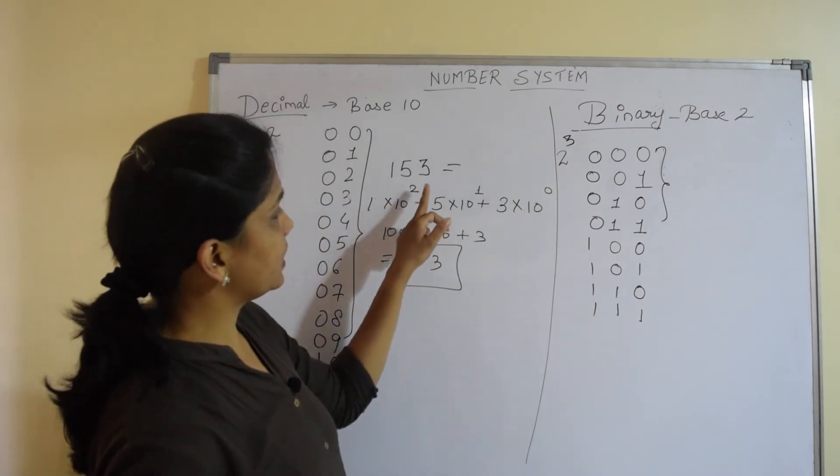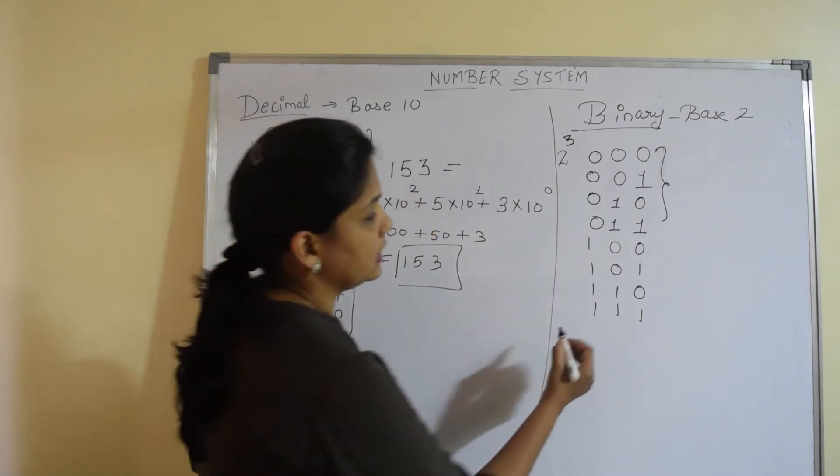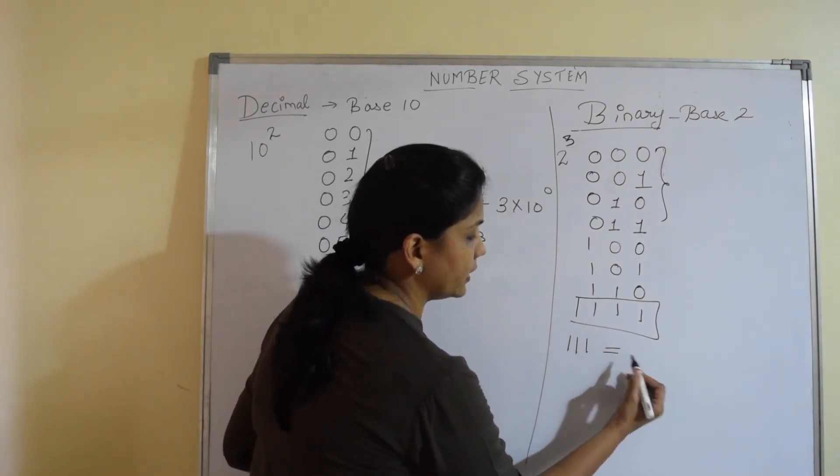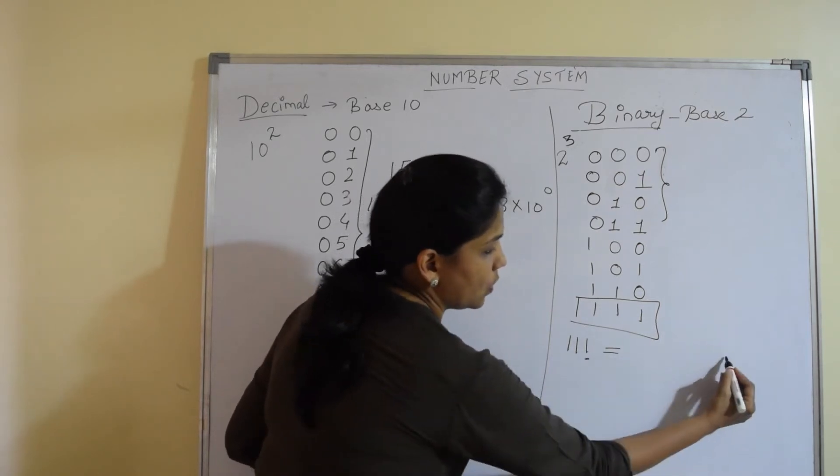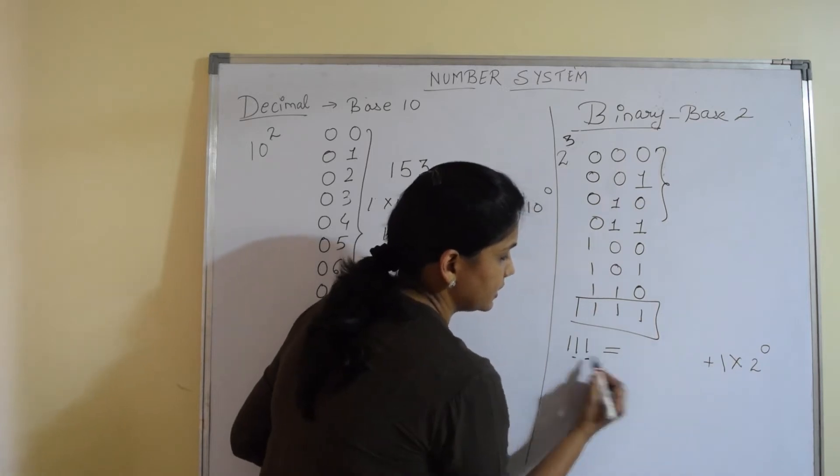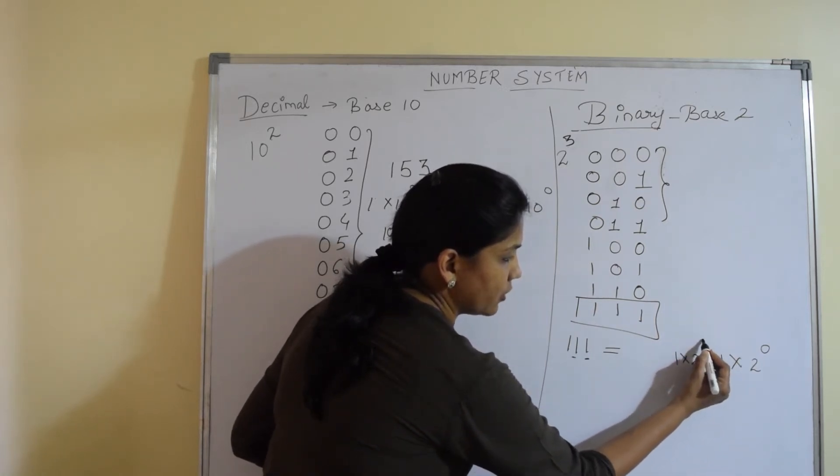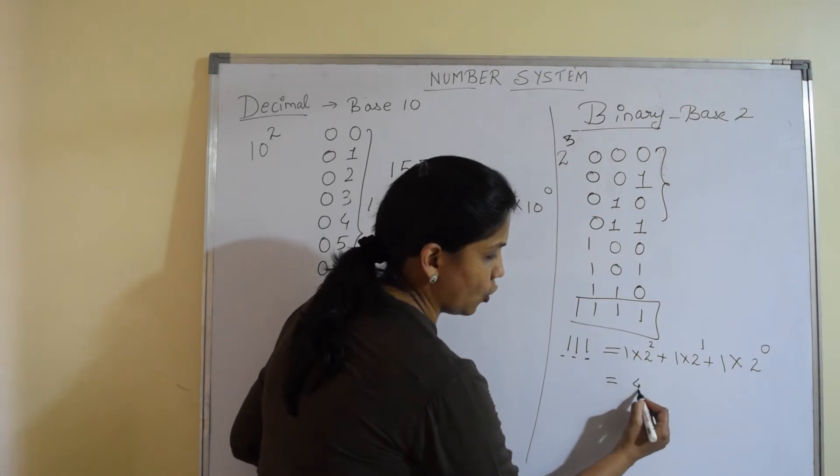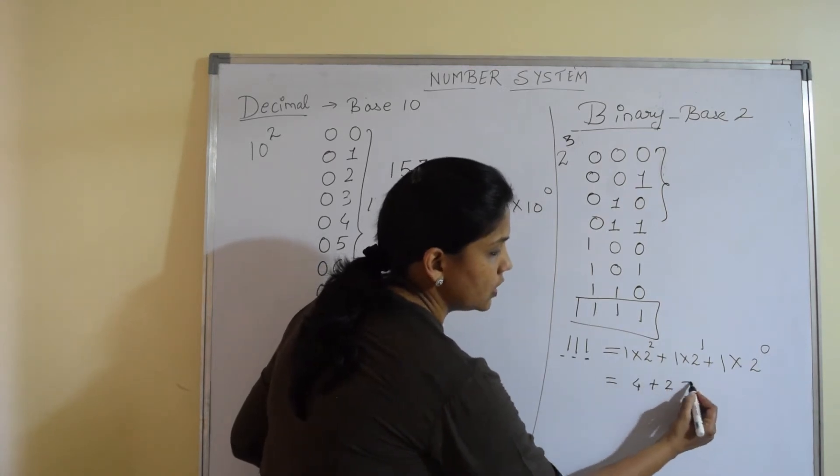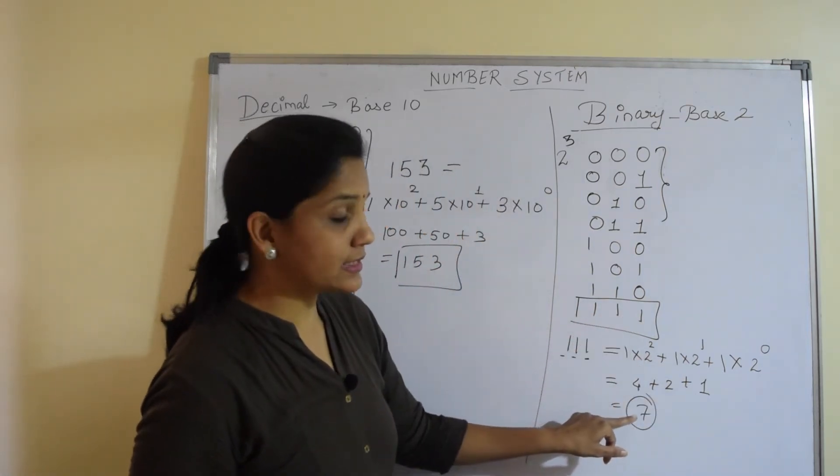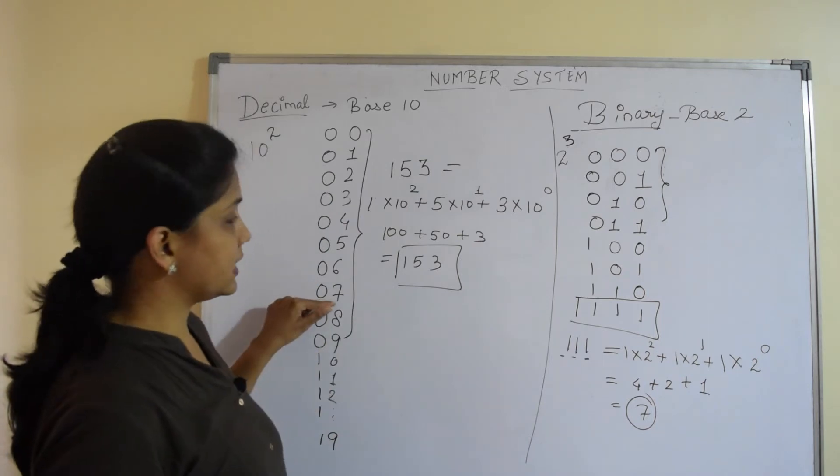Now let's again represent the binary numbers in this form. Let's take 111. This can be written as 1 into 2 to the power 0 plus 1 into 2 to the power 1 plus 1 into 2 to the power 2. That is 4 plus 2 plus 1, we get 7. So 111 represents 7 of the decimal number.